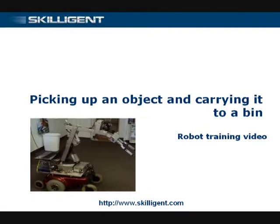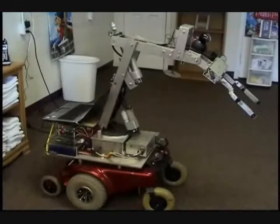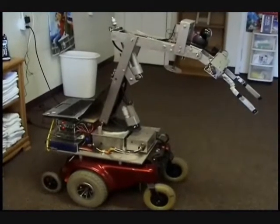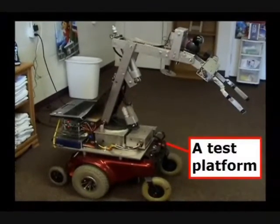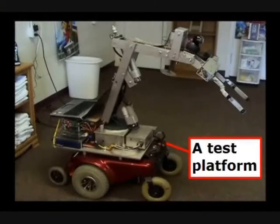This video demonstrates the capabilities of Skillagen software to learn and execute procedures which include controlling a mobile robot and using a robotic arm manipulator. The sample mobile robot shown in this video is equipped with a 6 degree of freedom robotic arm manipulator and a video camera mounted on the arm.